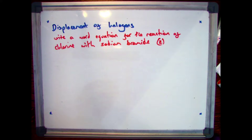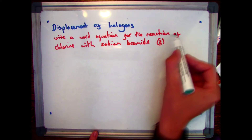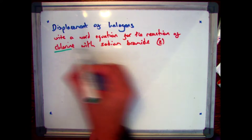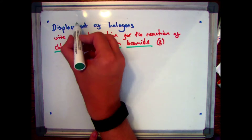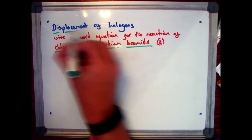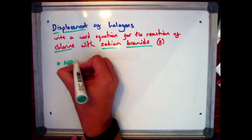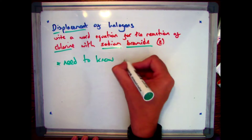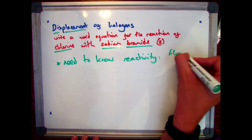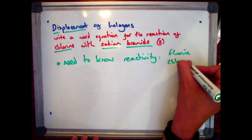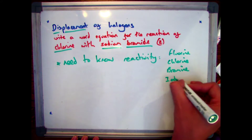The final displacement reaction you need to know is the halogens, which is group seven in the periodic table. For example: write a word equation for the reaction between chlorine and sodium bromide. Similar to the metal example, you need to know the reactivity series for halogens.